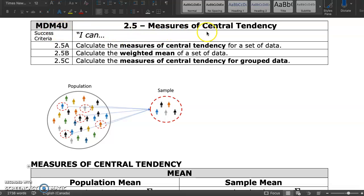MDM-4U-2.5, Measures of Central Tendency. Measures of Central Tendency include mean, median, and mode, which are different ways of finding the middle of the data set.